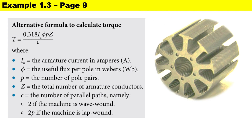In the formula, Ia is the armature current measured in amperes, the flux per pole measured in weber. Small letter p is the number of pole pairs, z is the total number of armature conductors, and c is the number of parallel paths. If it's wave wound, c is equal to two, and if it's lap wound, c is equal to two times small letter p.